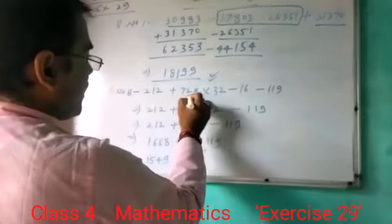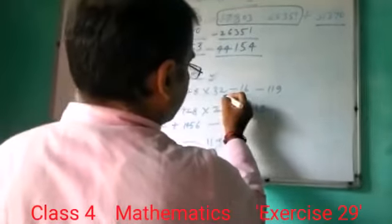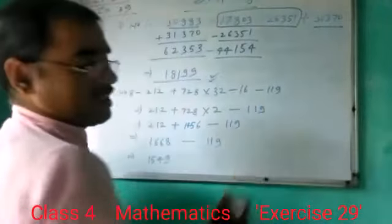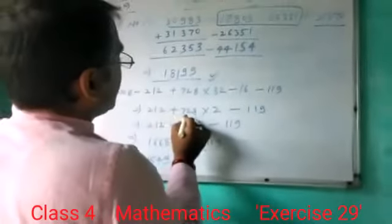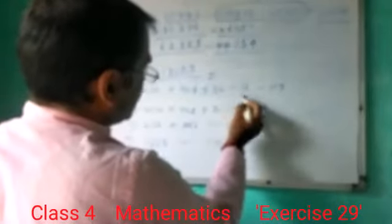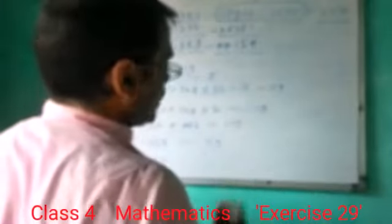Once, check them. 212 plus 728 into 32 divide 16 minus 119. First one, divide.